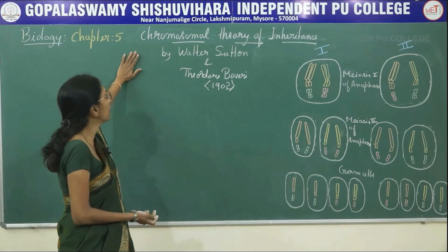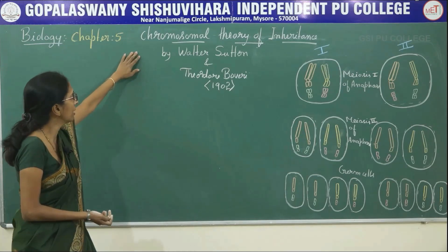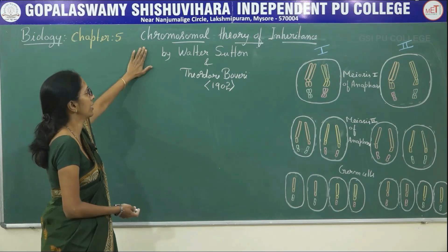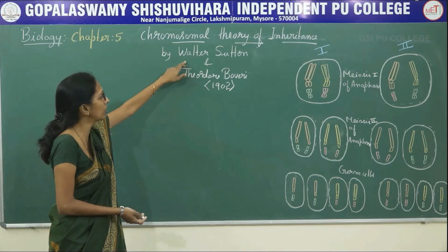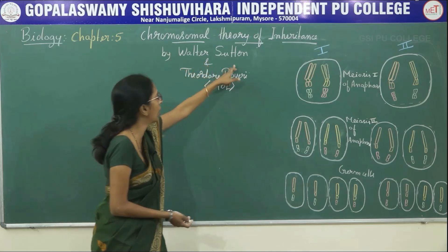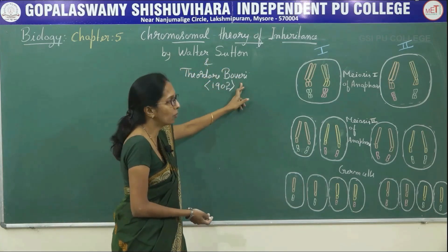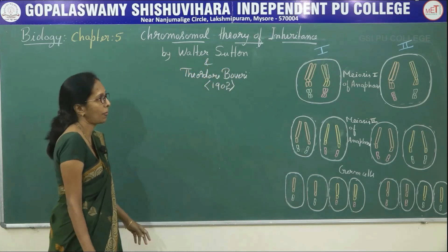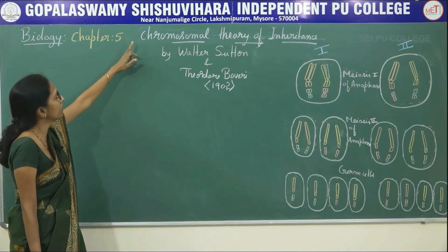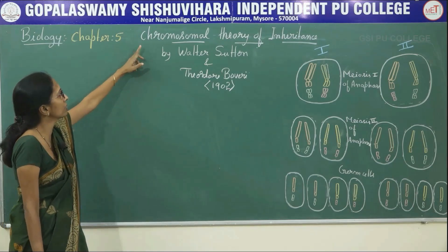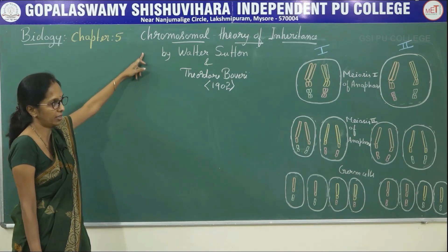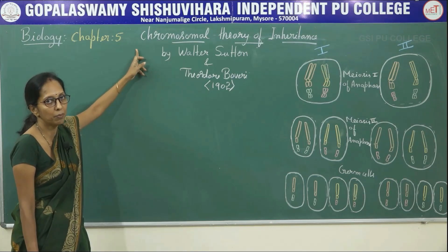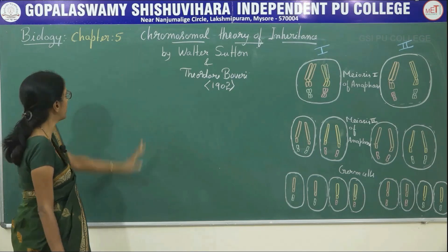Now coming to the next very important topic, that is the chromosomal theory of inheritance. It was proposed by Walter Sutton and Theodore Boveri in 1902. Before entering into this theory, you need to understand some important points.